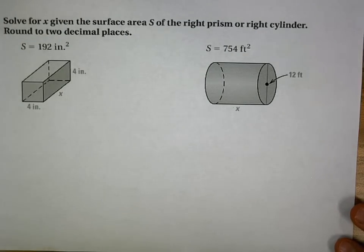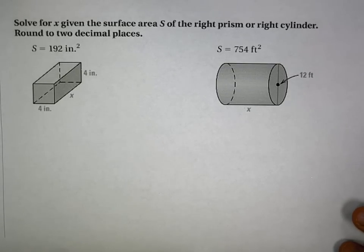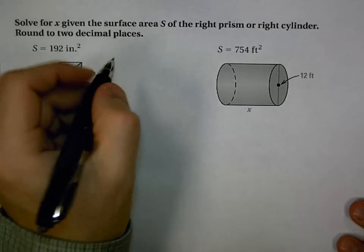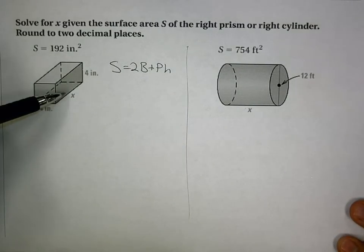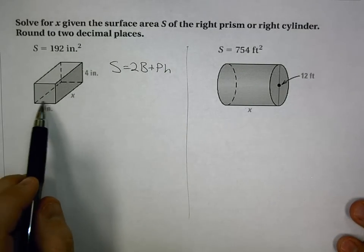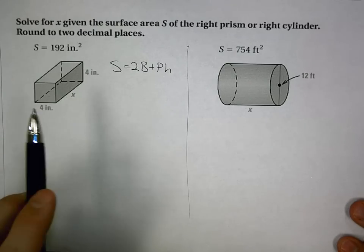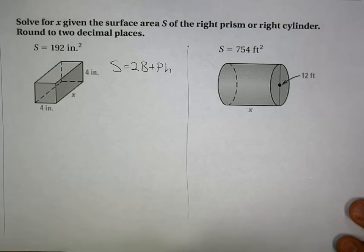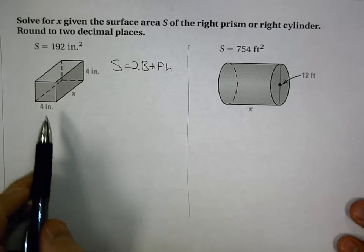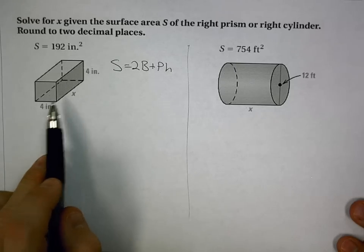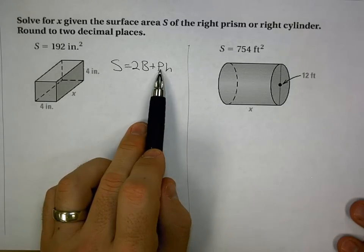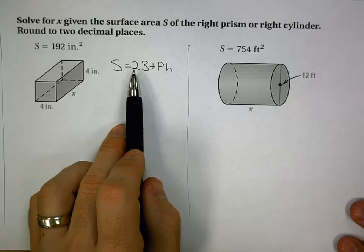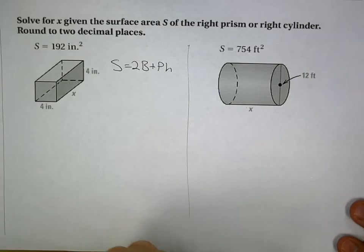Now what if we're given the surface area and need to find a missing value? We still use the same formula, 2 times base area plus perimeter times height. For this prism, I'm not going to use the bottom 4 by x base. I'm going to use the 4 by 4 sides as my bases, so x is my height. Base area is 16, perimeter is 16.